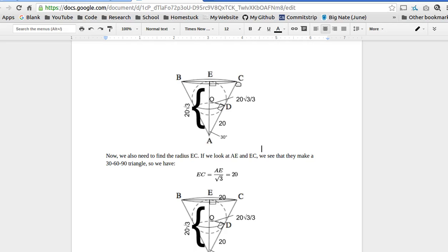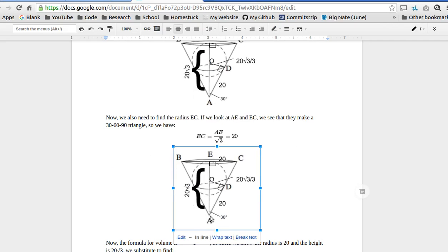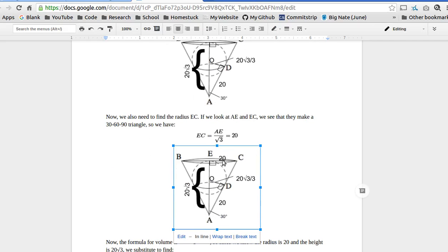So again, the height is the side opposite 60. So EC is the side opposite 30. So we divide AE by radical 3 to get a radius of 20, which I've drawn here. So the radius is 20. The height is 20 square root of 3.